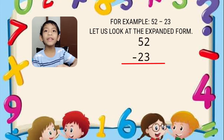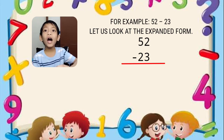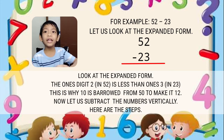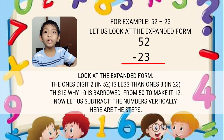52 minus 23. Let us look at the expanded form. The 1's digit 2 in 52 is less than the 1's digit 3 in 23. This is why 10 is borrowed from 50 to make it 12. Now, let us subtract the numbers vertically. Here are the steps.